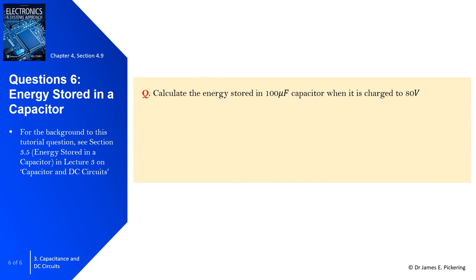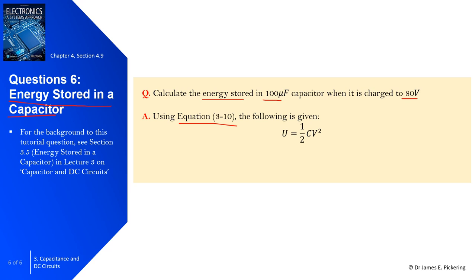The final question, question 6, asks us to calculate the energy stored in a 100 microfarad capacitor charged to 80 volts. Using equation 3.10, the energy stored U equals one half C V squared. The capacitance is 100 times 10 to the power of minus 6, multiplied by 80 squared, giving 320 millijoules — where millijoules is 10 to the power of minus 3.